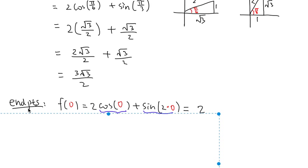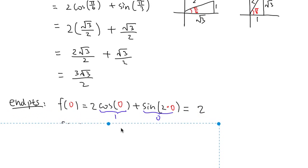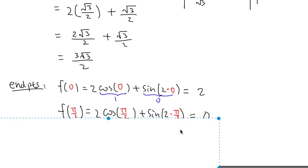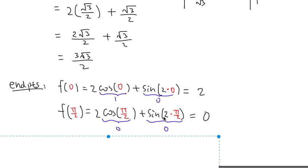Now we check the endpoints. At t = 0: f(0) = 2cos(0) + sin(0) = 2·1 + 0 = 2. At t = π/2: f(π/2) = 2cos(π/2) + sin(2·π/2) = 2·0 + sin(π) = 0 + 0 = 0.